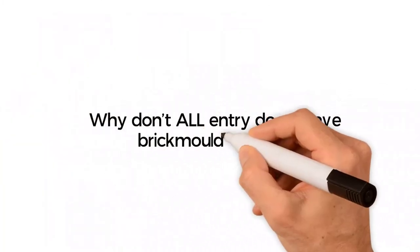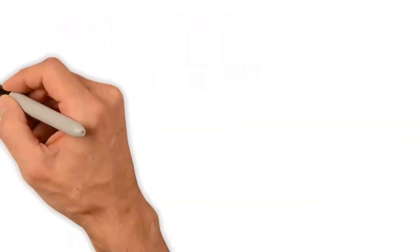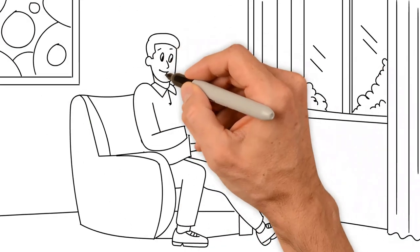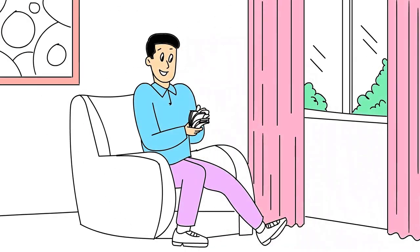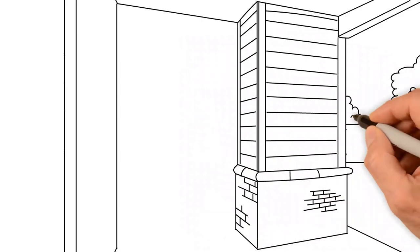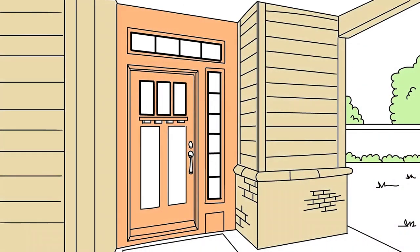Well, why don't all entry doors have brick molding then? Because some homeowners would rather save money and leave the trim or casing aside. And some homes already have external trim in place, leaving no room for additional brick molding.